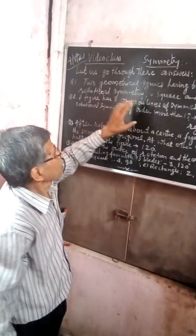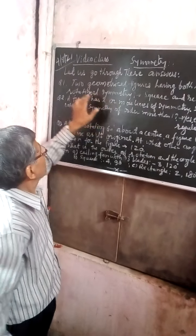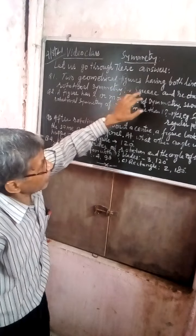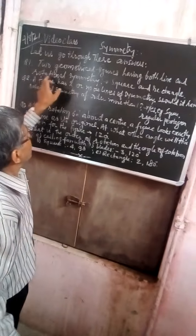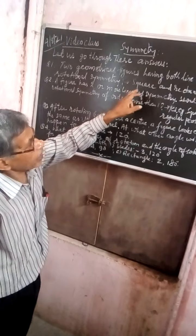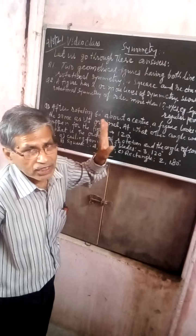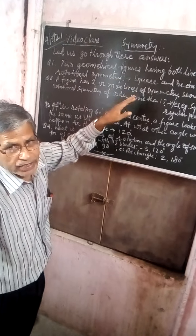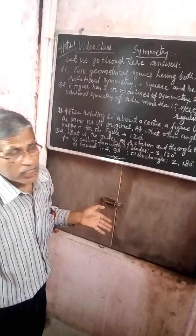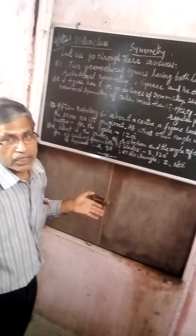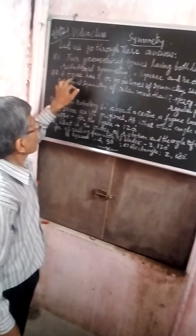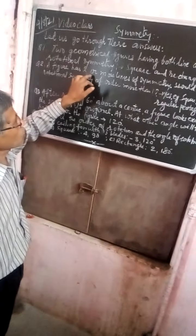See here some questions and their answers — go through these answers. First question: two geometrical figures having both line and rotational symmetry. They are a square and a rectangle. You have seen already that a square has line symmetry and rotational symmetry also. Same is true for a rectangle.